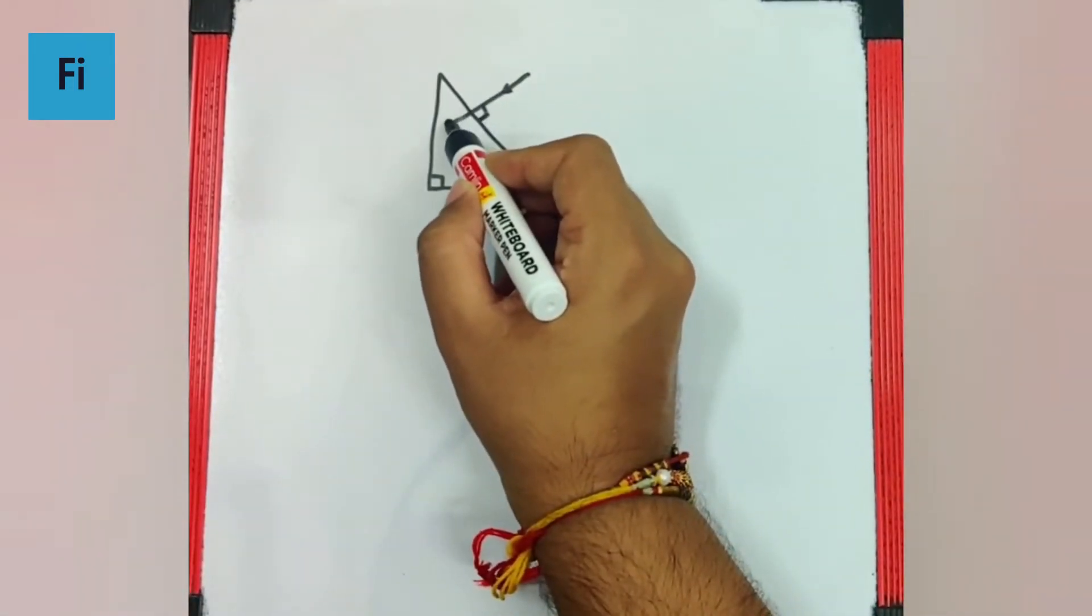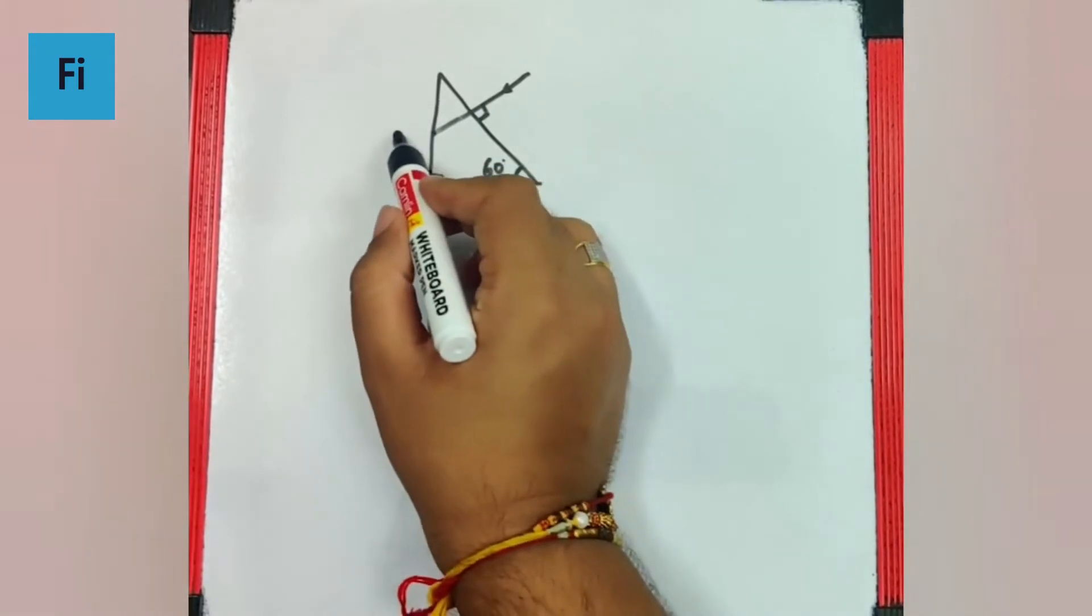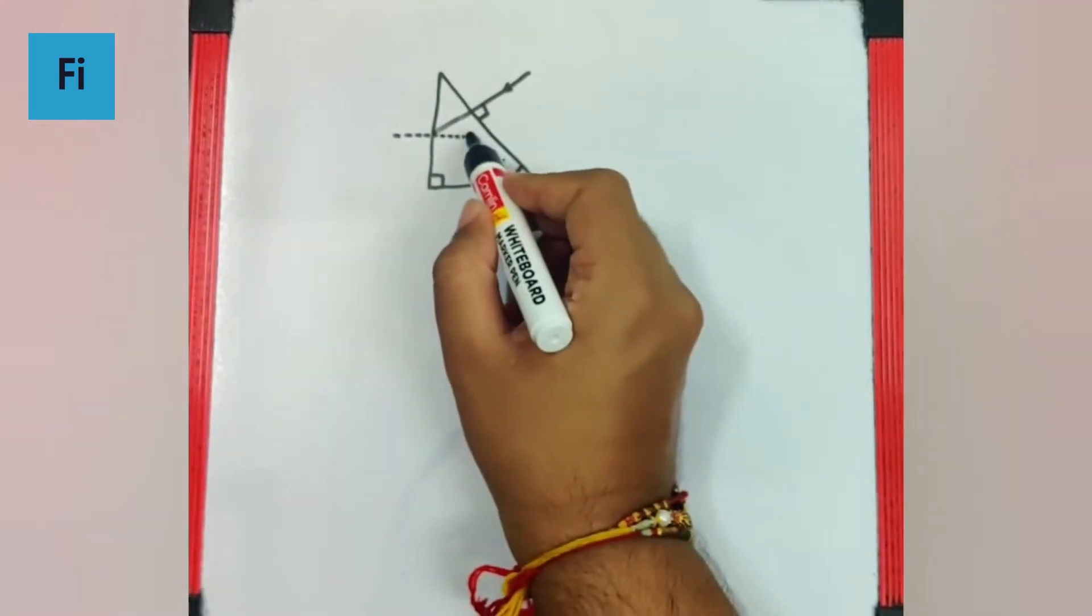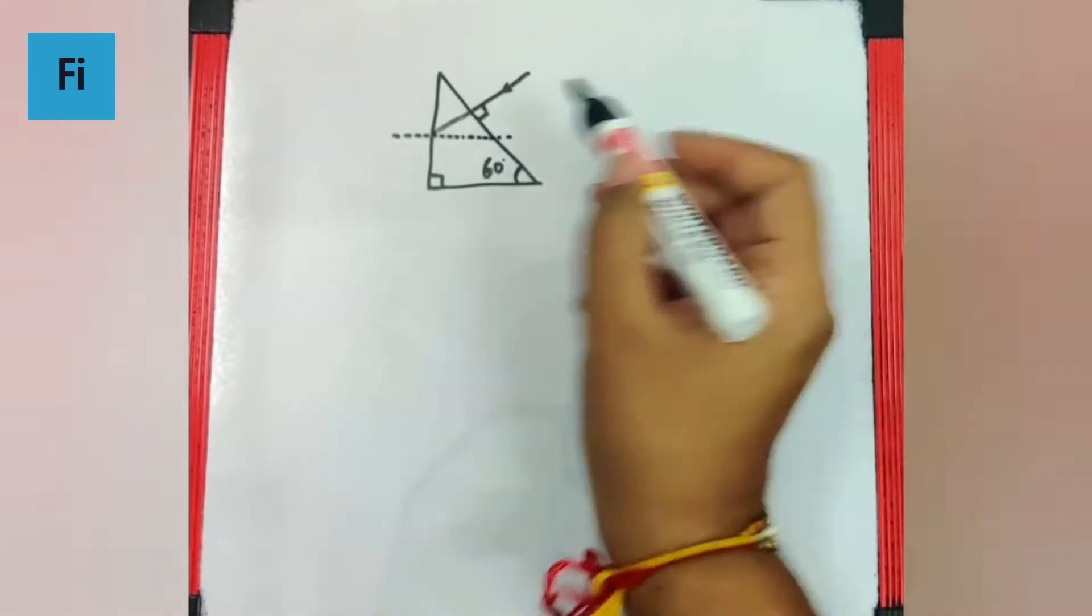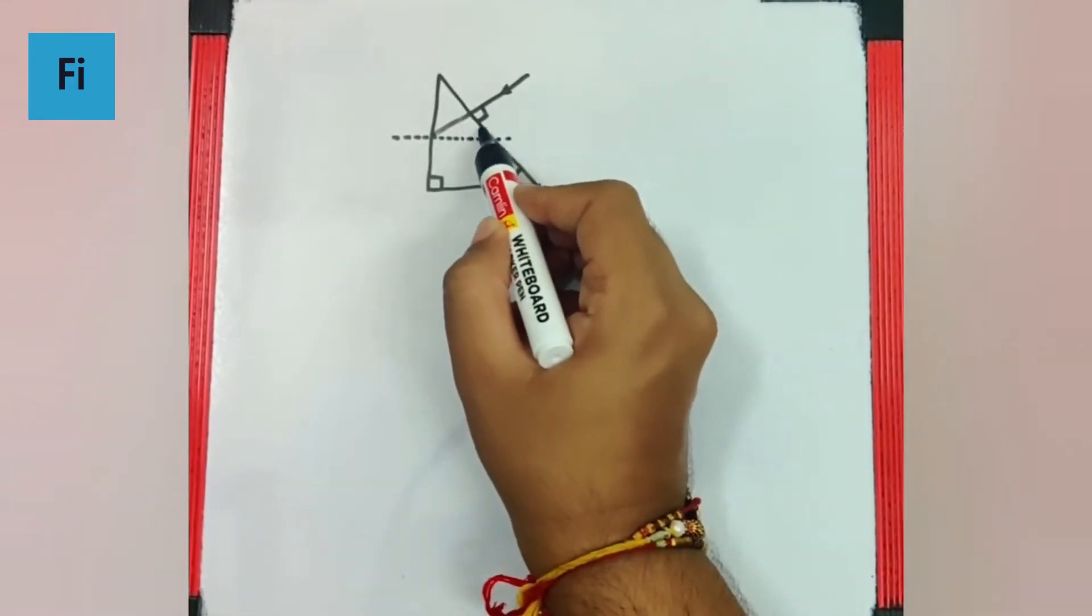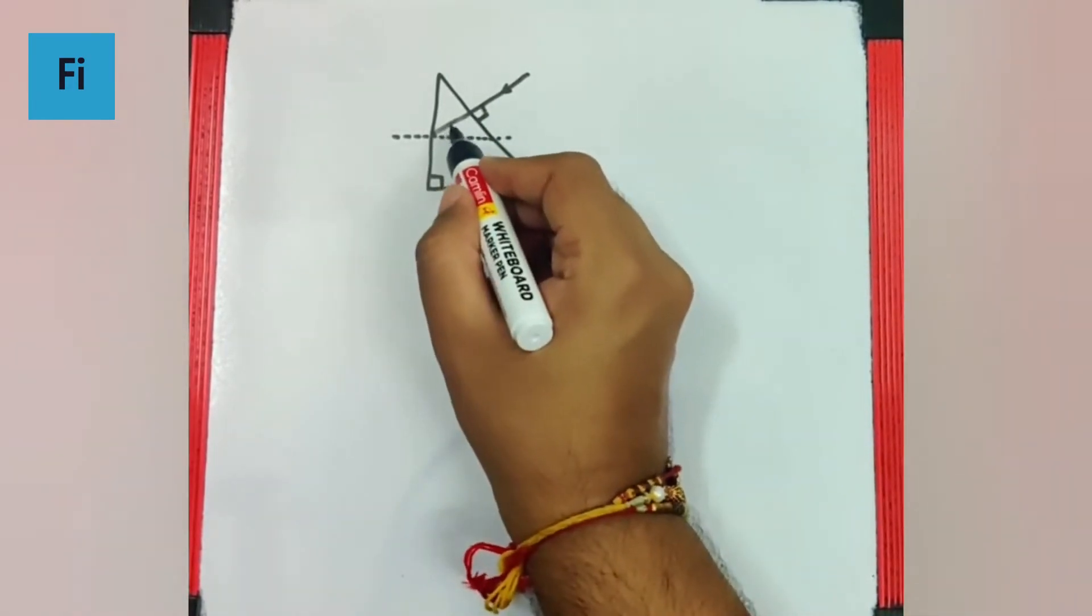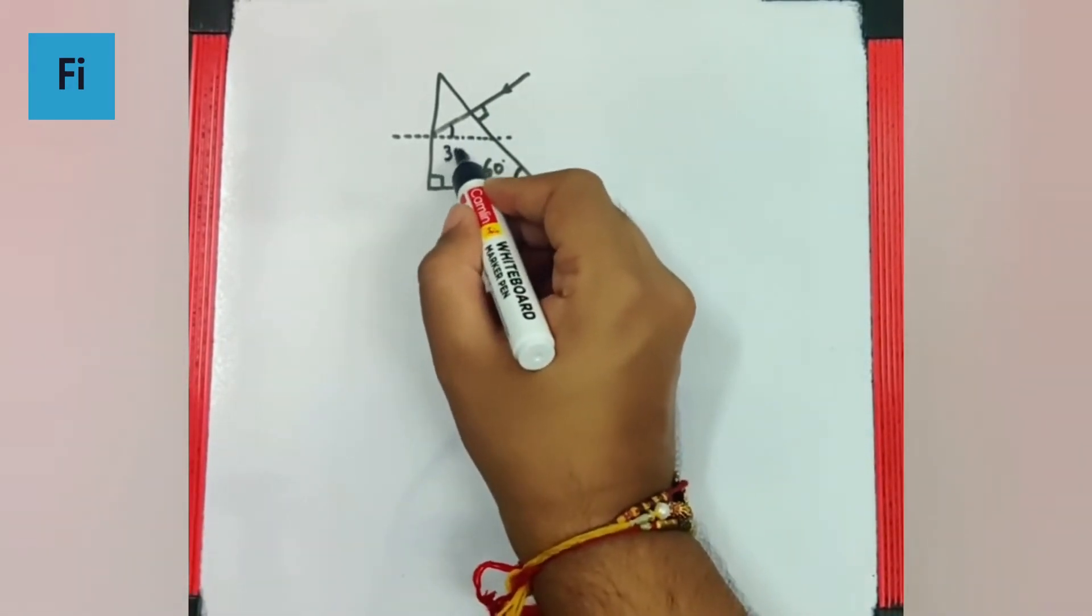So if it is normal then it is obvious that the light will strike over here. And we can draw a normal at this point. Now if it is normal then it will be 90 and it will be 60 by corresponding angles. So this angle will be 30 degrees.